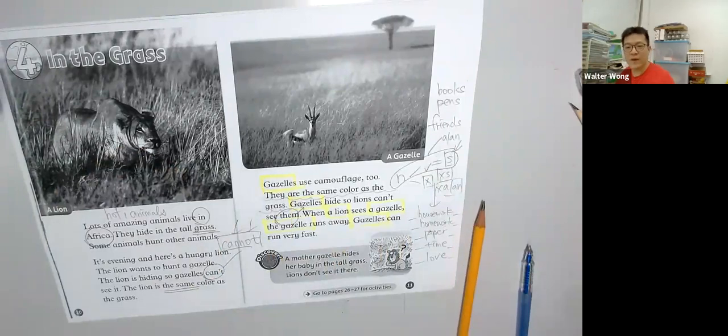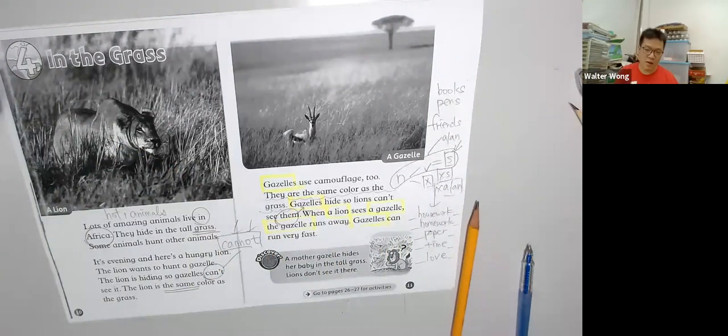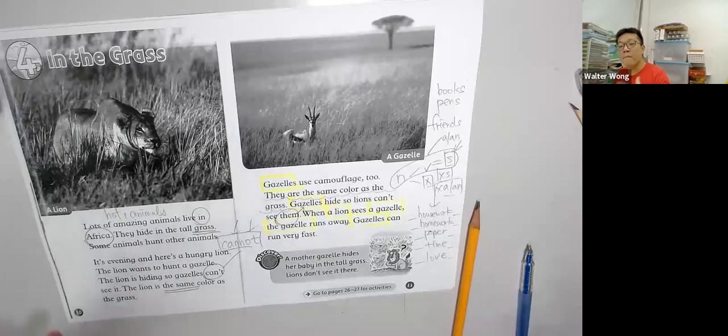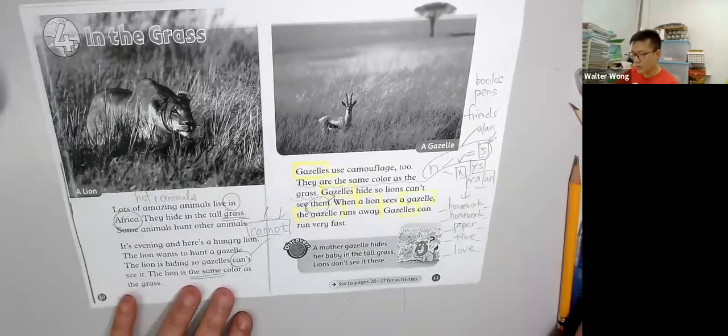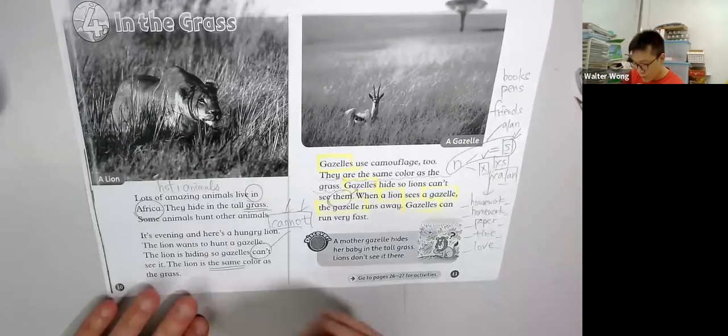要練個意識,要練個feel出來. 剛才我們講動詞. 這一個我們講名詞. 名詞有分 兩個字,數到數不到. OK? Easy.